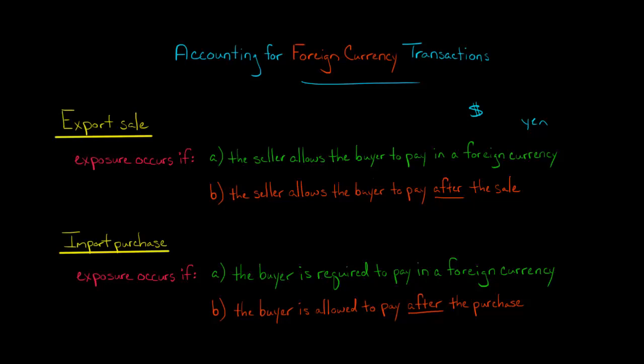but we're selling to a company in Japan that's going to pay us with Japanese yen. And we allow the buyer, so that Japanese company, to pay at some point after the sale has taken place. Then we could have a gain or a loss if the Japanese yen appreciates or depreciates relative to the U.S. dollar before the buyer pays us.